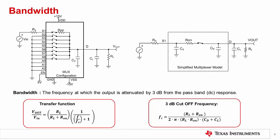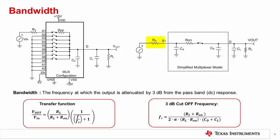The first parameter we will discuss is multiplexer bandwidth. Multiplexer bandwidth is defined as the range of frequencies that are attenuated by less than 3 dB at the drain pin when an input is applied to the source pin of an input channel that is switched on. The figure shown highlights the simplified multiplexer model when switch S1 is on. The simplified circuit is just a voltage divider created by R on and the load impedance, which is composed of the reactances CD, CL, and RL.